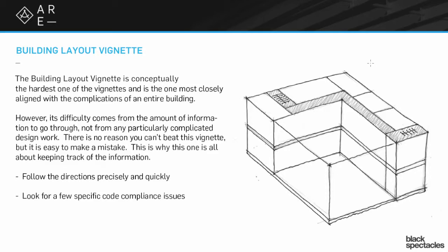Right now we're going to talk about the two-story building schematic design, and we'll talk about the interior layout in a different video. The issues are: you have to follow the information really precisely and do it quickly. You have a lot of time for the building design, but you have to keep moving because there's so much to do. There are also a few very specific code compliance issues — this is not a comprehensive code review, but you want to make sure you've hit those issues and gotten them all.